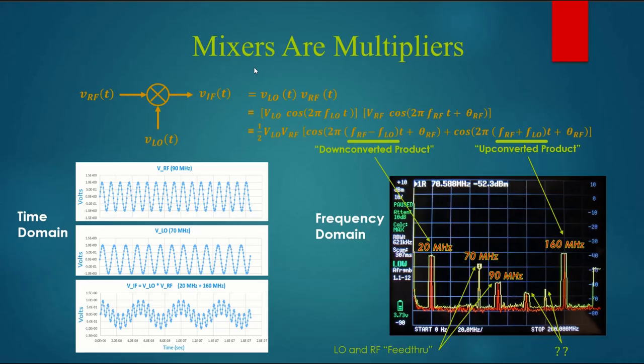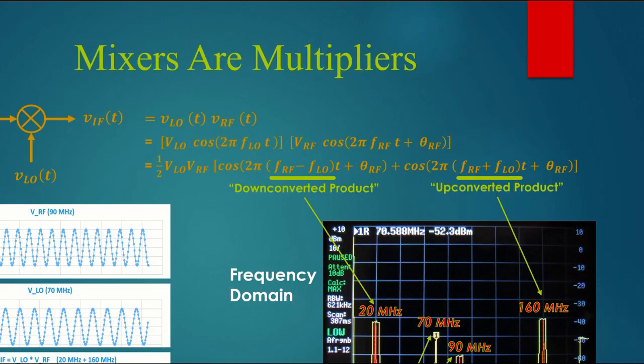Here's what happens in an ideal mixer. The output is just the product of the LO and the RF incoming signals. If we plug in formulas for those signals in terms of cosines, then we get the second expression. And finally, if we use the trig identities we learned in high school, we were able to take the second line and turn it into the third line in this formula. We'll parse this result in a few seconds and see what it's trying to tell us.